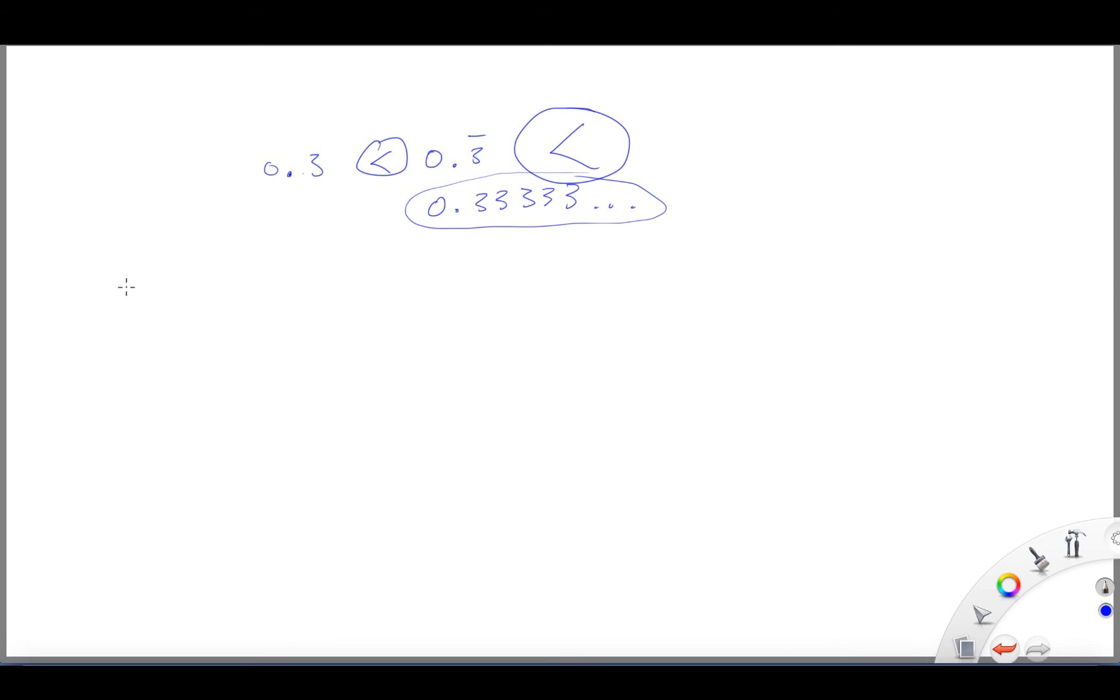Okay, B gave us a number, several numbers. Okay, B had 0.6 repeating, 0.6 repeating. The next one was just simply 0.6, and the third number was 0.65.